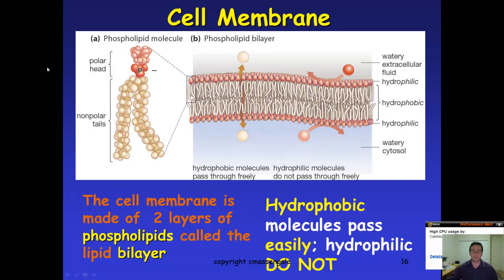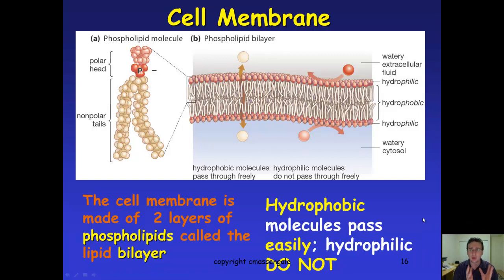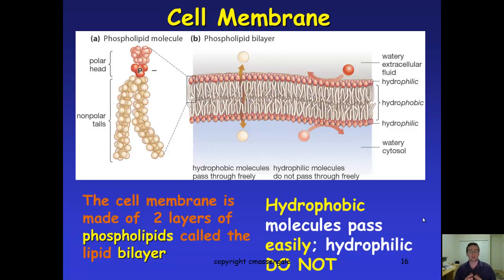I think of it as trying to get through a very unfriendly crowd. As you can see, the red molecule — which is polar, matching the red on the polar head on the left side — is blocked from entering, while the clear molecules are allowed to pass freely through, from the extracellular fluid into the cytosol, or backwards.